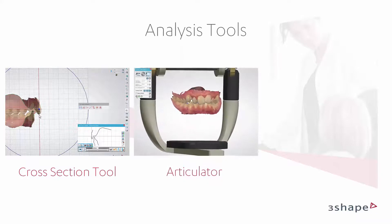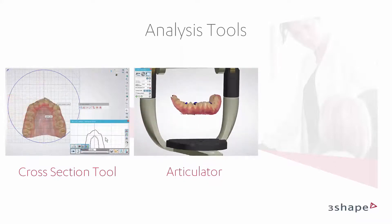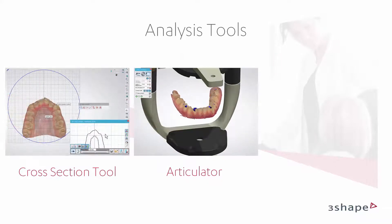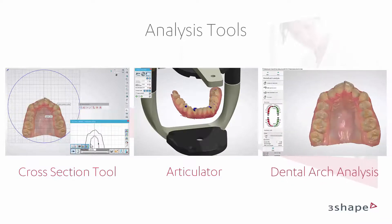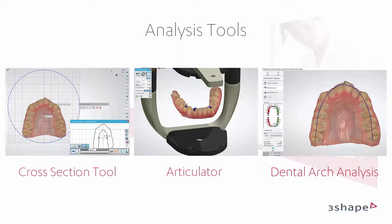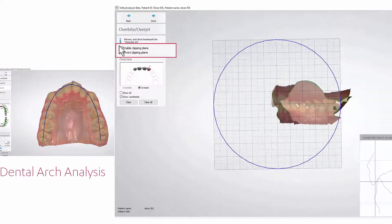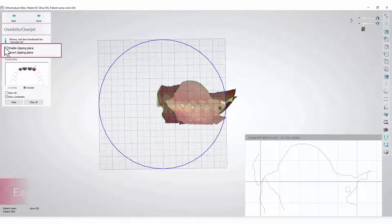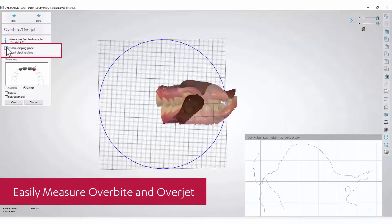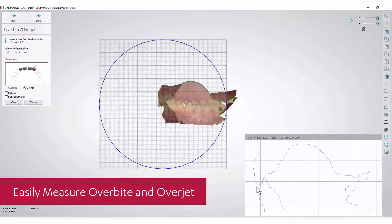The Articulator tool enables you to simulate articulation during your virtual treatment planning. The Dental Arch Analysis tool will help you measure crowding or spacing. It is worth knowing that in OrthoAnalyser, you can easily measure overjet and overbite.